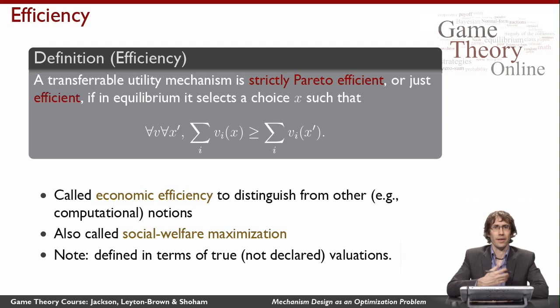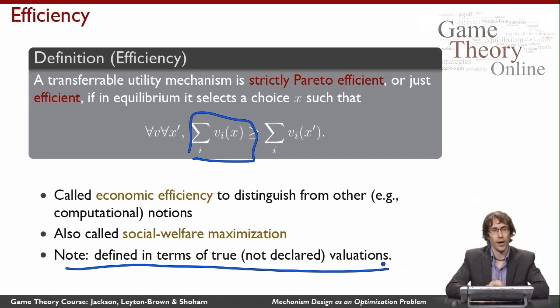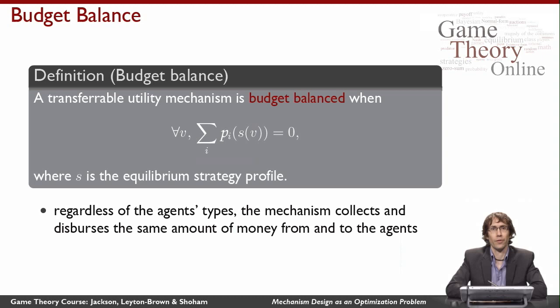For the purposes of mechanism design, it really does make sense to think of Pareto efficiency as maximizing the sum of everyone's values — not their payments, just their values. We also call this economic efficiency, to distinguish it from computational efficiency, and social welfare maximization, for the obvious reason that we're picking the outcome that maximizes the sum of agents' utilities. Notice that here we're talking about the agents' actual valuations.